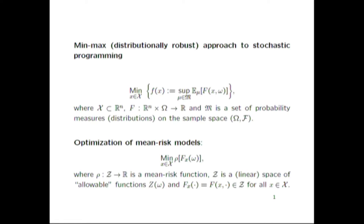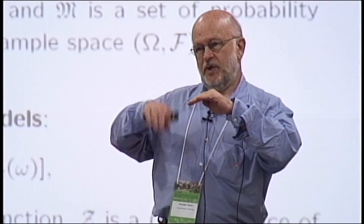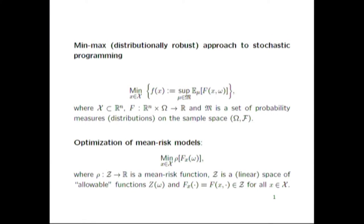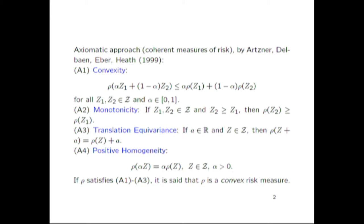The famous Markowitz model, revolutionary 50 to 60 years ago in finance, tries to reach a compromise: maximizing profit on average and controlling risk by minimizing variability, putting some weight or penalty on it. For a very long time these two approaches — worst-case optimization and variance-based risk — existed as completely different things, with no connection between them, for at least 50 to 60 years.